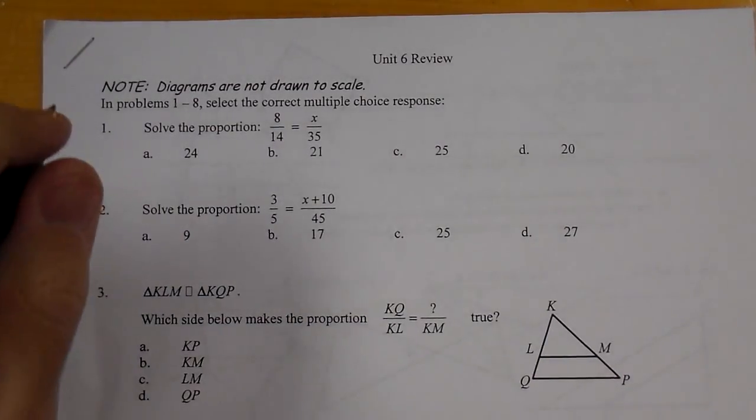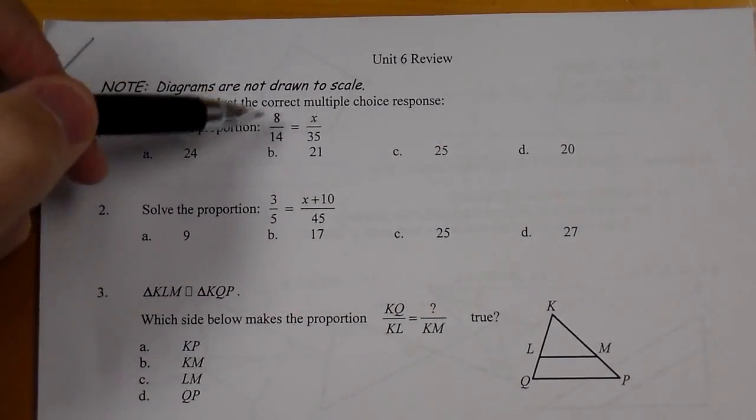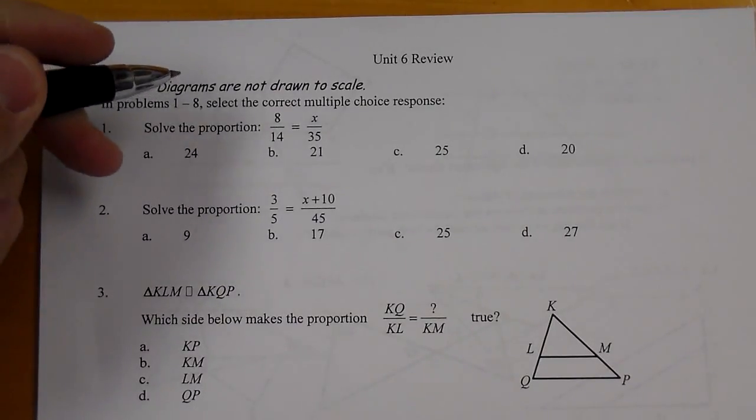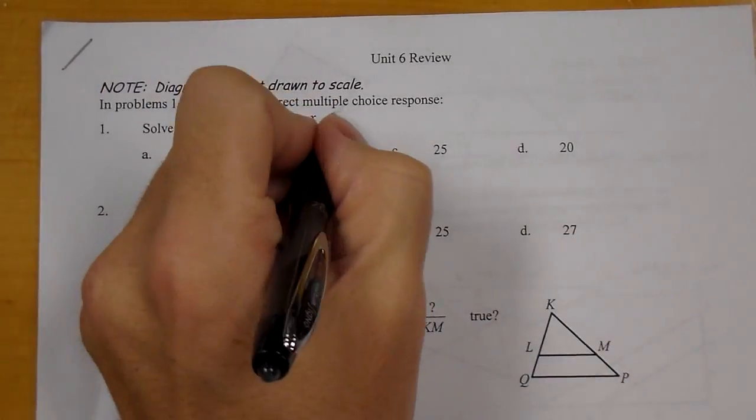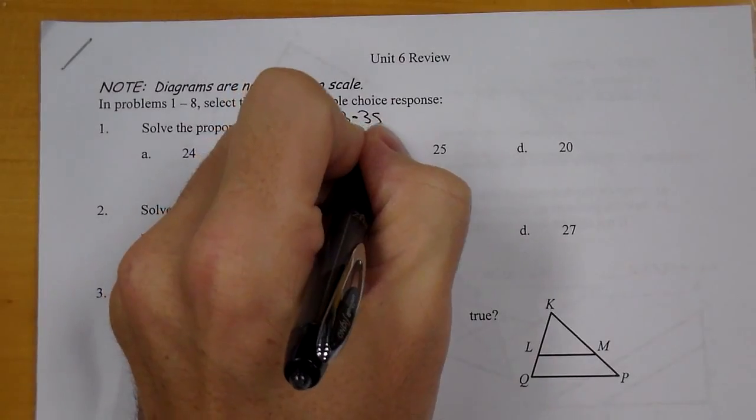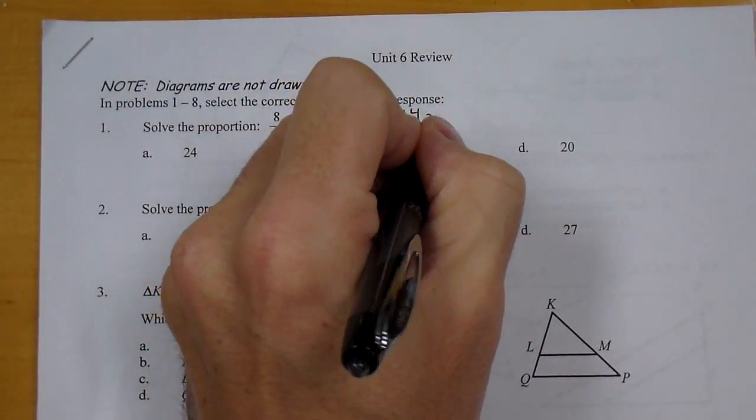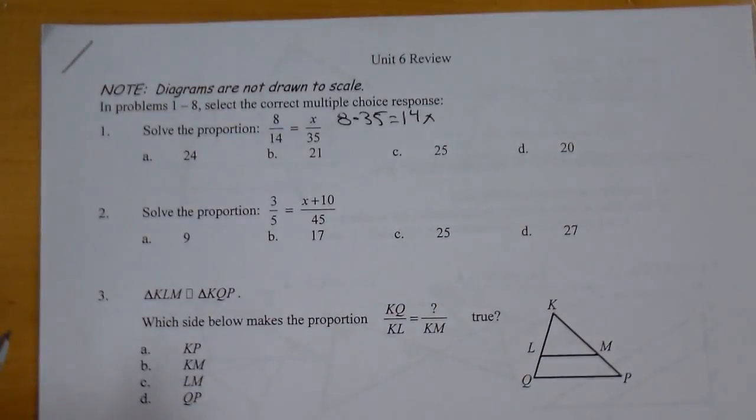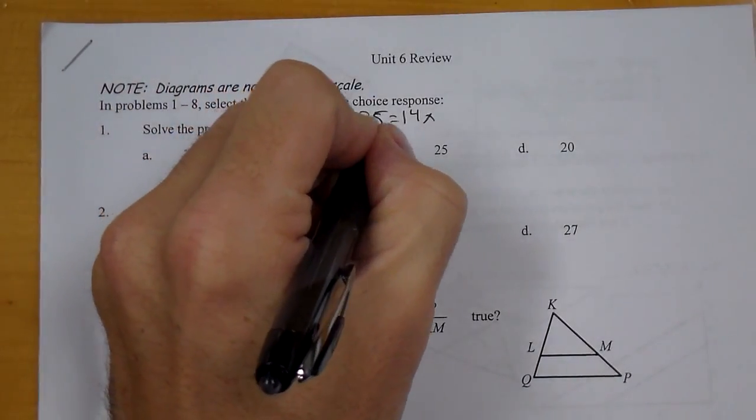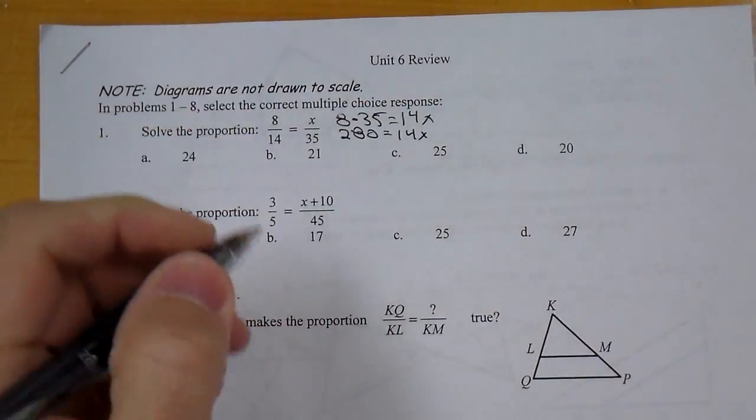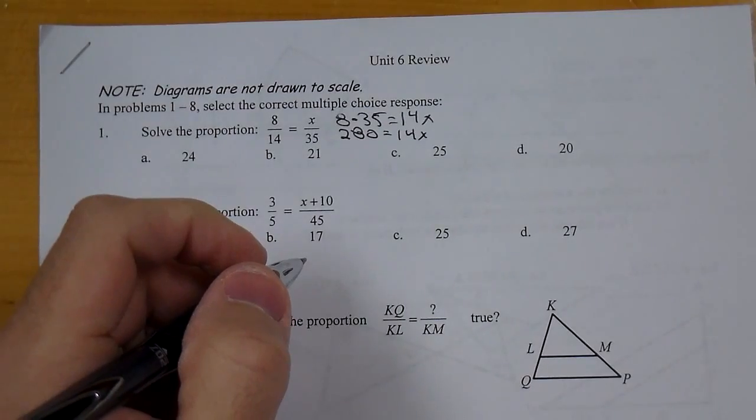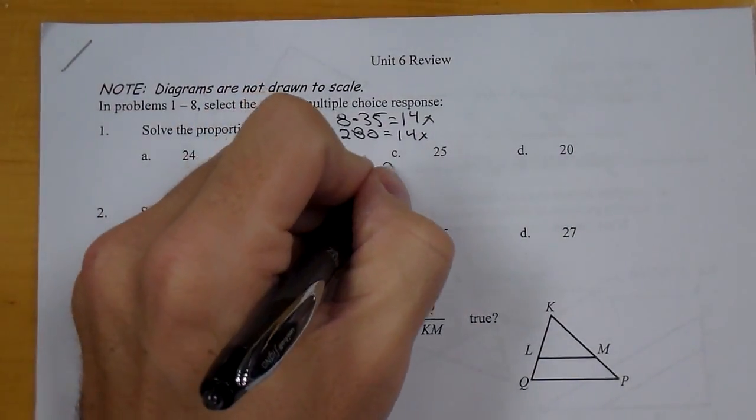Looking at the Math 2 Unit 6 review. Our first problem, we have 8 over 14 equals x over 35. We can do cross product, which is going to be 8 times 35 equals 14x. 8 times 35 gives us 280 equals 14x. We then divide 280 by 14, and we get x is 20.